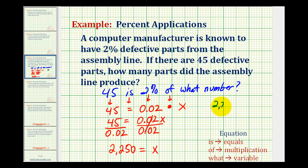So we know 2250 parts were produced, and of that total, 2% were defective, which means 45 parts were defective.